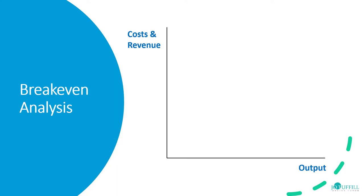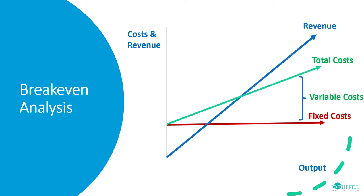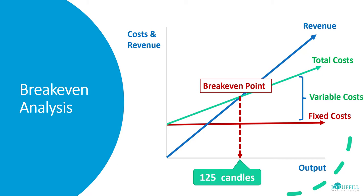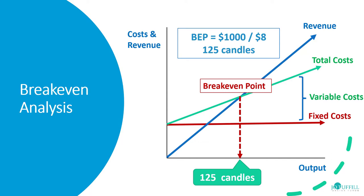Revenue goes up as output goes up — the more you sell, the more you get in revenue. Fixed costs remain the same whatever the output level. If we apply variable costs on top of those fixed costs, which go up as output increases, we get a total cost line. Where revenue equals total costs is called our break-even point, and this tells Clara she needs to sell 125 candles. We get that by dividing the fixed costs of $1,000 per month by the $8 contribution, which is the sales price minus the variable cost per unit.